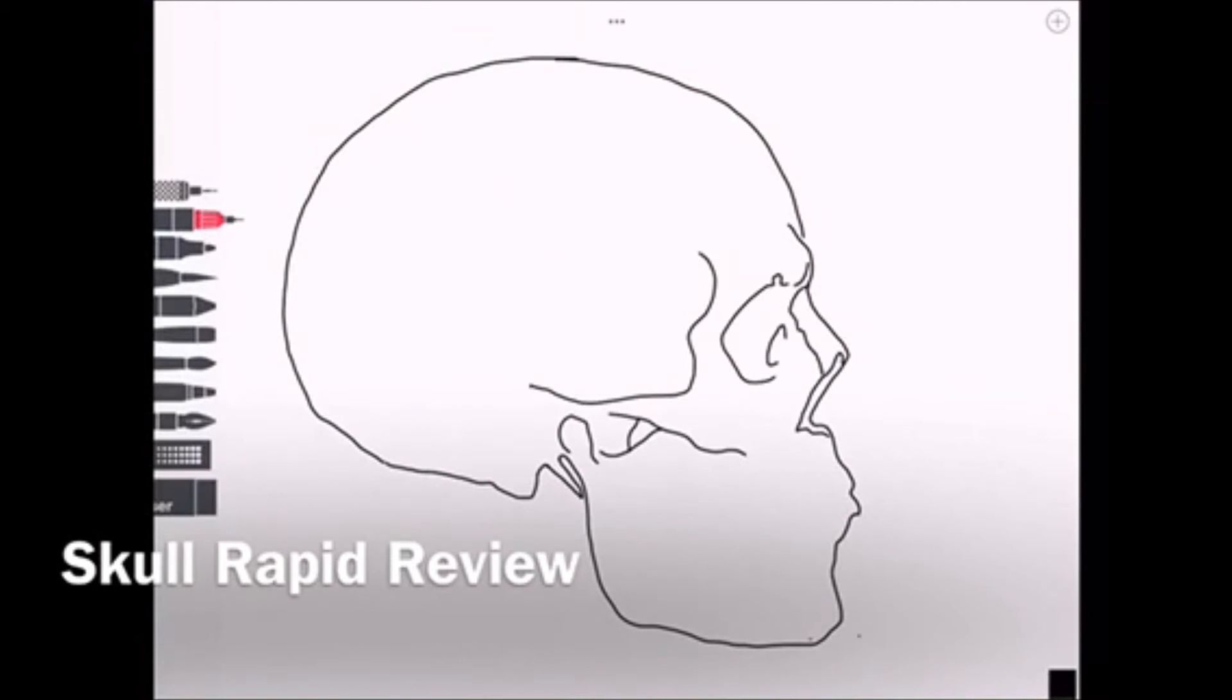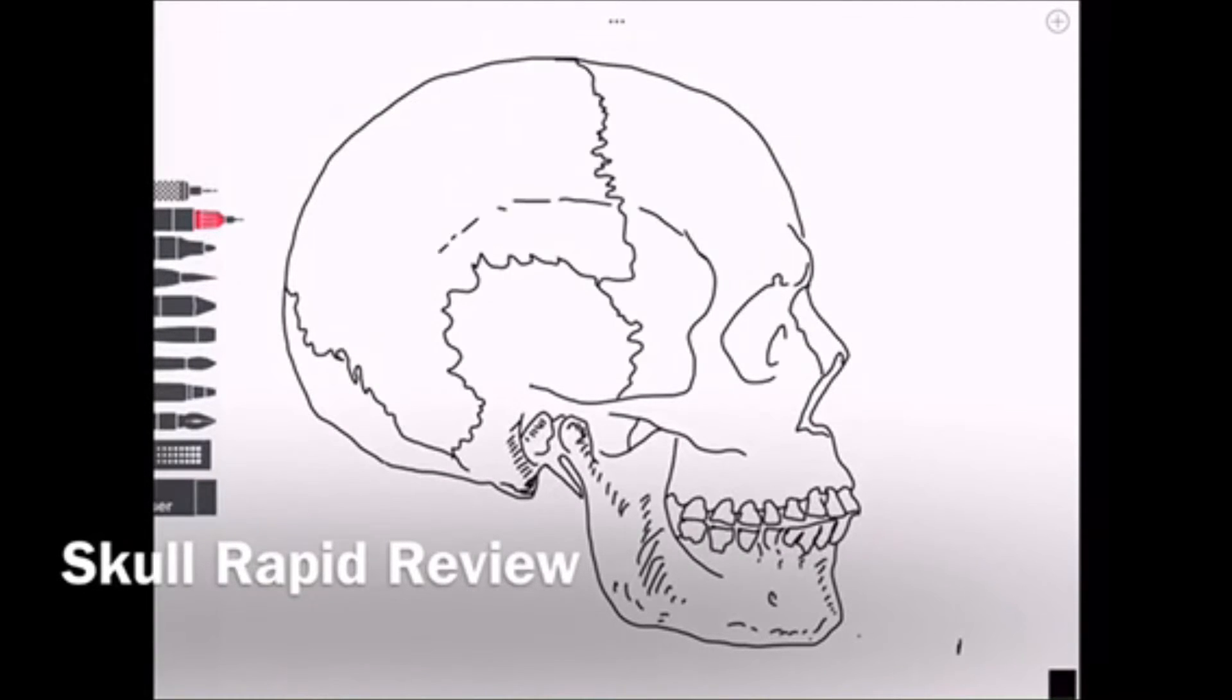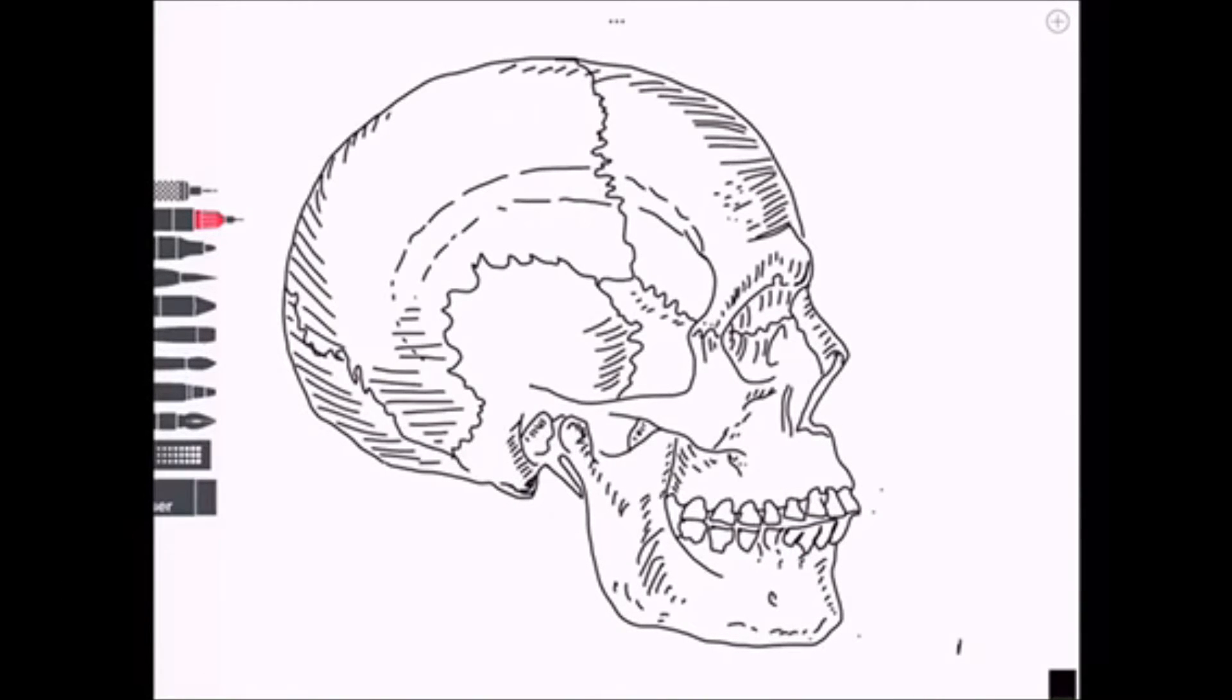Hello and welcome to this review of the skull. The skull is made up of the calvaria and the facial skeleton. It's comprised of 22 individual bones if we don't include the small ossicles of the ear.